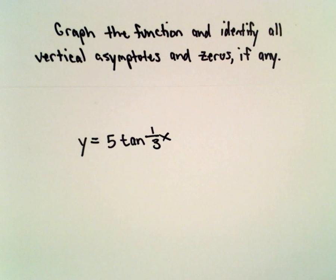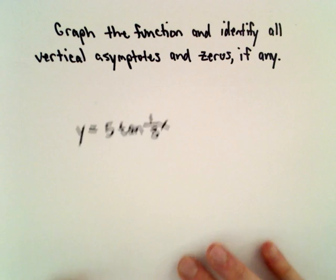Okay, here we're going to graph y equals five times tangent of one-third x. We'll pick out vertical asymptotes and zeros.